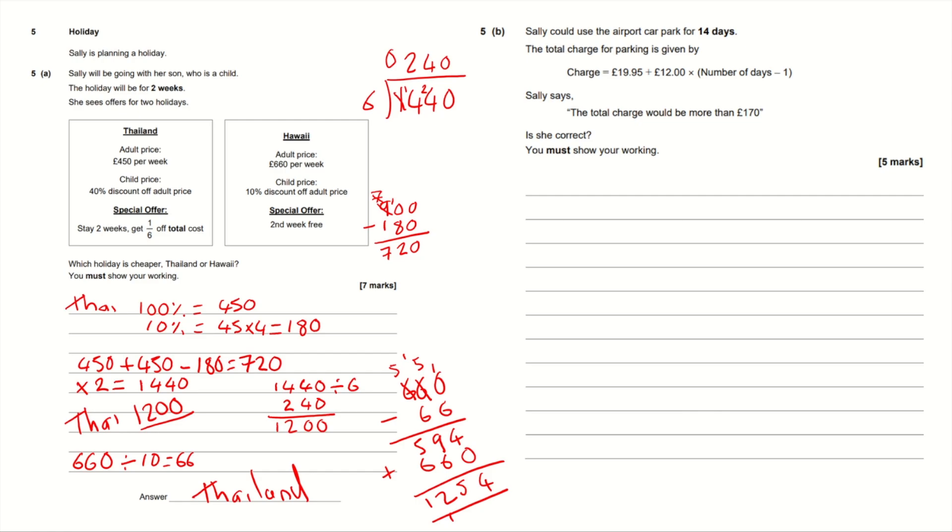Question 5B. Sally could use the airport car park for 14 days. The total charge for parking is given by charge equals £19.95 plus £12 times the number of days minus 1. Sally says the total charge would be more than £170. Is she correct? You must show your working.